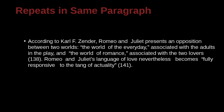According to Carl F. Zender, 'Romeo and Juliet presents an opposition between two worlds — the world of the everyday associated with the adults in the play, and the world of romance associated with the two lovers' — cited as 138. Then 'Romeo and Juliet's language of love nevertheless becomes fully responsive' is another quote cited as 141. These first two quotes are from page 138 and the third is from 141. We don't need to write the author's name again because it's the same paragraph.